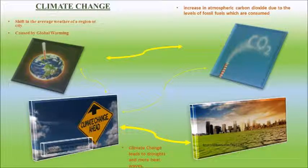Climate change is defined as a shift in the average weather of a region or a city. This shift is then caused by global warming. Climate change occurs due to the increase of atmospheric carbon dioxide because of the fossil fuels which humans consume and use. One of the effects of climate change is the occurrence of drought-stricken areas.